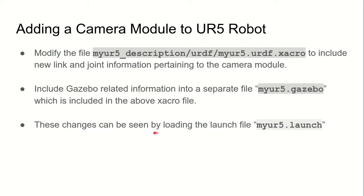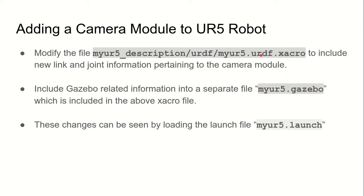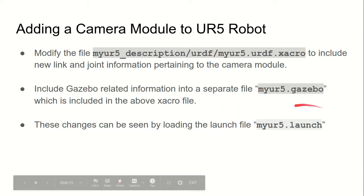In order to add a camera module, we will have to modify the myur5.urdf.xacro file, which includes the new link and joint information related to the camera module. Then the Gazebo-related information is now put into a separate file called myur5.gazebo. We no longer include them in the main file — we include them in the separate file and call that file from this file. Finally, the changes can be seen by calling the launch file.